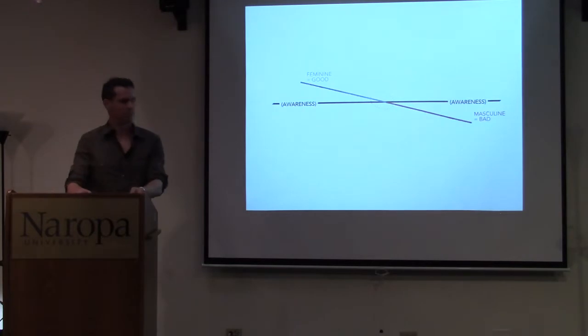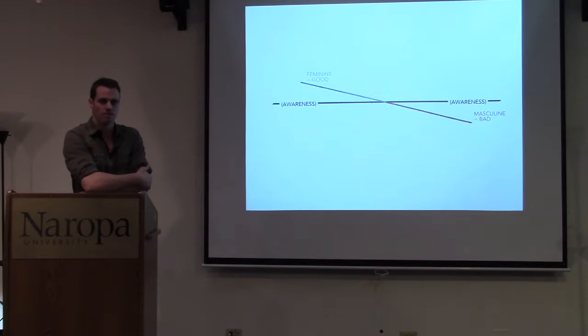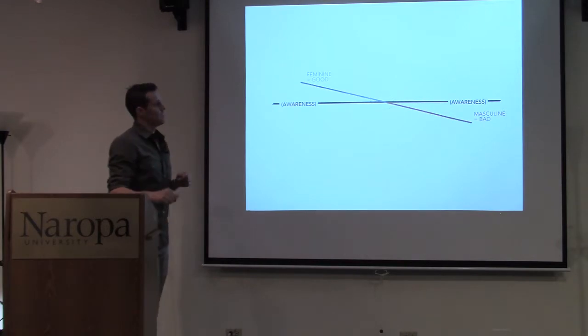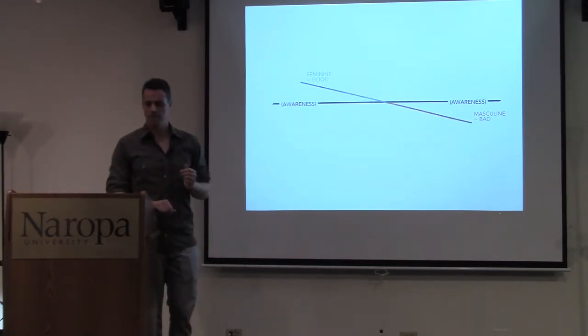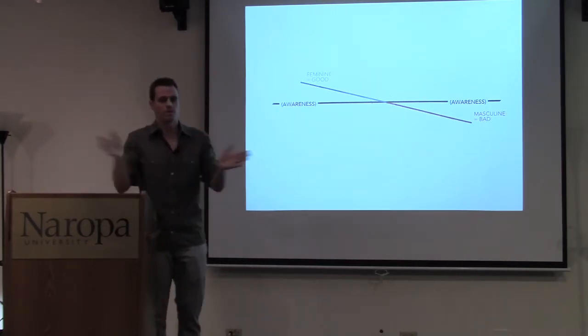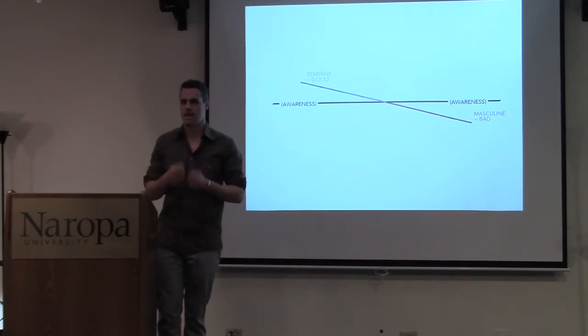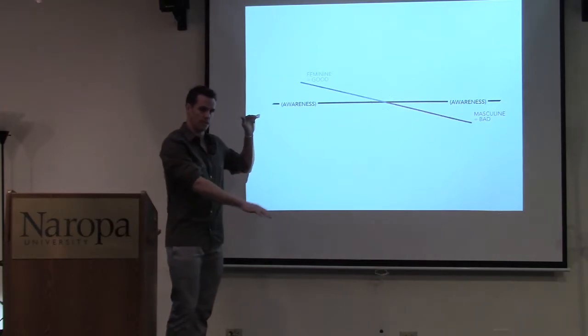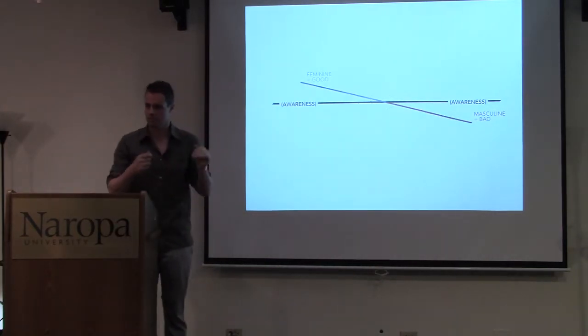However, things rarely work out that smoothly. And we rarely arrive in adulthood equally skilled in our feminine and our masculine capacities. This means that we rarely arrive in adulthood with a full range of choices at our disposal. And this happens because in childhood we start to favor one way of being over the other. So to take my own life as an example,